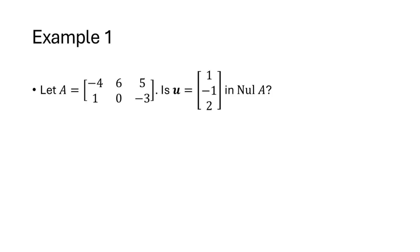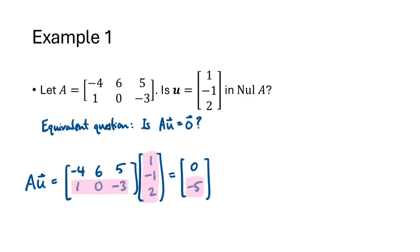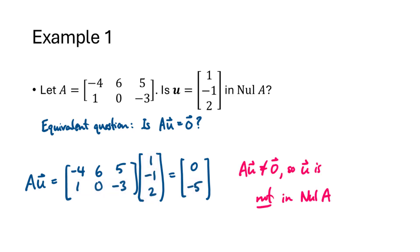Let's take a look at an example. If A is this matrix and u is the vector (1, -1, 2), is that vector in the null space of A? This question is equivalent to asking whether A times u equals zero. So we multiply A times u and see if we get the zero vector. Going across each row of the matrix and down the entries of the vector, the first entry of A times u is zero, but the second entry is negative 5. Since we didn't get the zero vector, u is not in the null space of A.